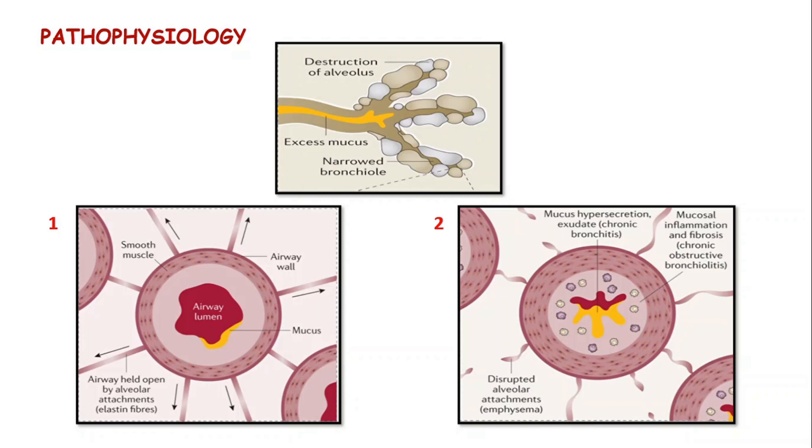And in case of emphysema patients, the elastin fibers are disrupted which are the alveolar attachments because of the enzymes protease and elastase secreted by macrophages and neutrophils as a result of inflammation. Thus, alveolus in an emphysema patient loses its elasticity.